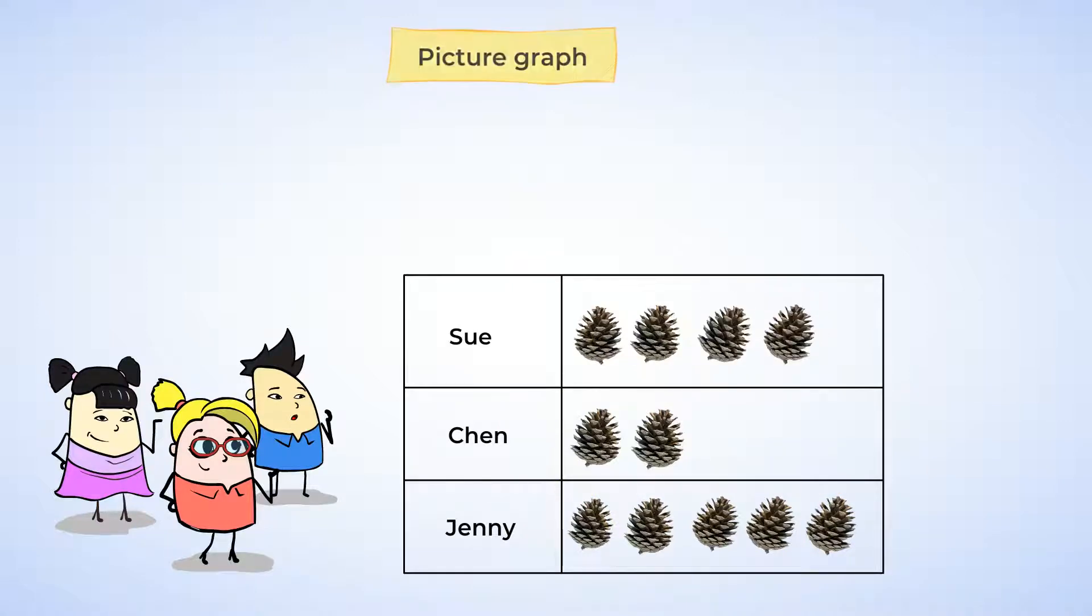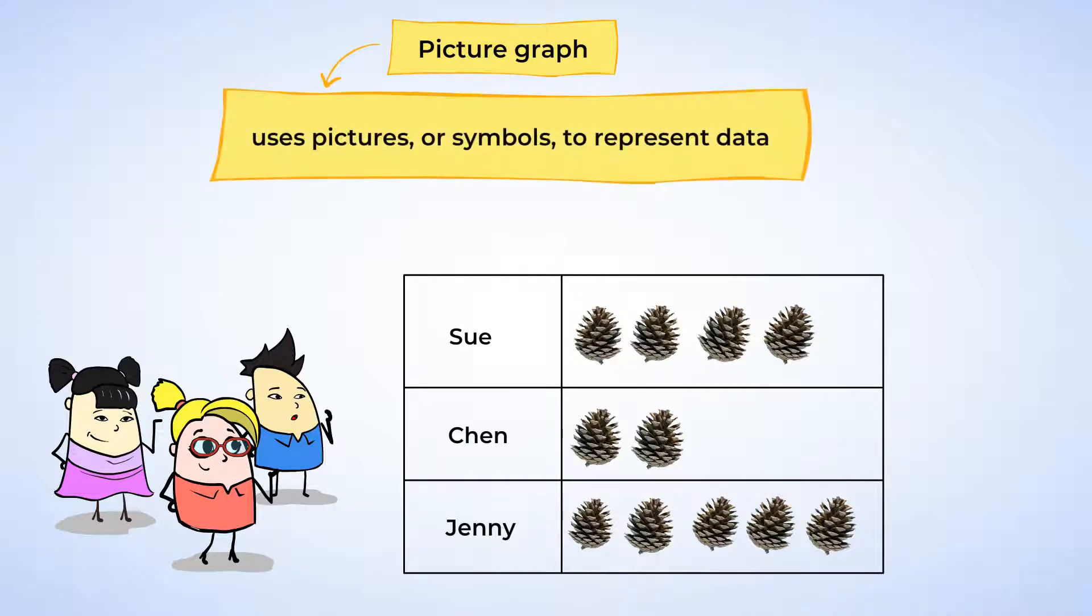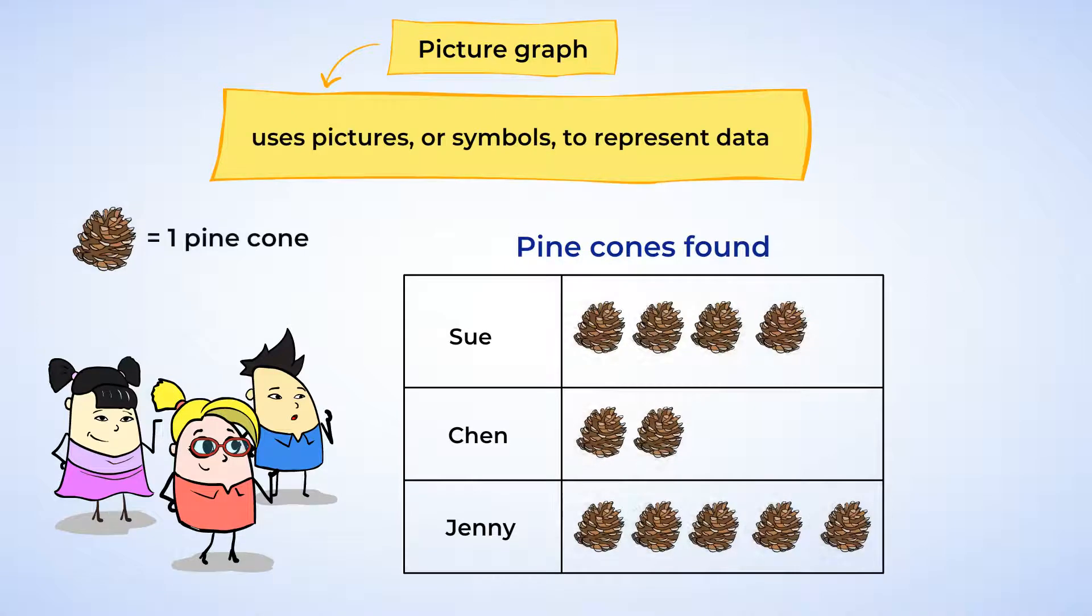What we just created is called a picture graph. A picture graph uses pictures, or symbols, to represent data. Here we represented the number of pinecones that each kid found. Instead of using the real pinecones, we can use a picture of a pinecone to represent one pinecone found.